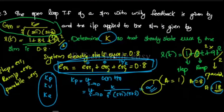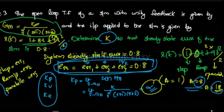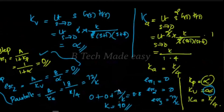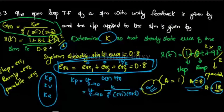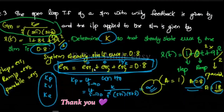We can find the corresponding A values for step, ramp, and parabola inputs. The total steady-state error is given as 0.8. Substituting: 0 plus 0 plus 72 by K equals 0.8. Therefore the K value is 90.